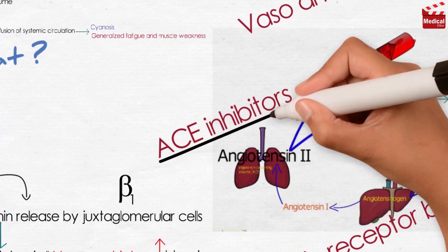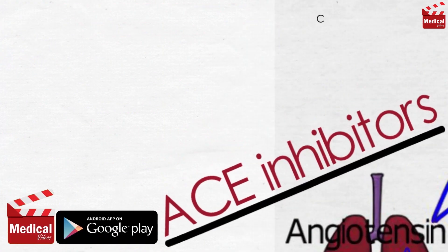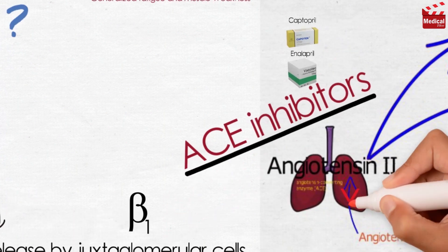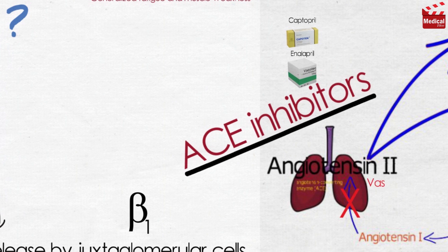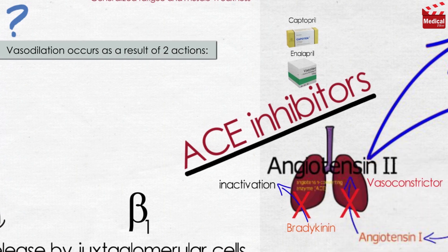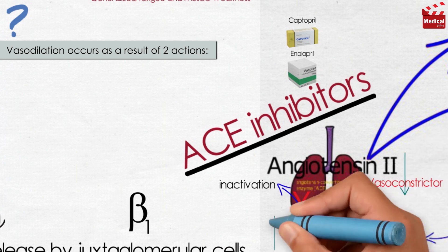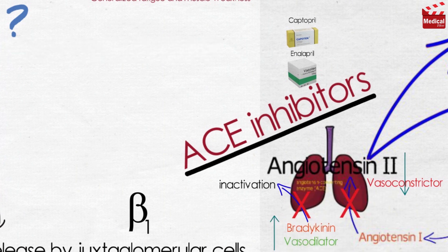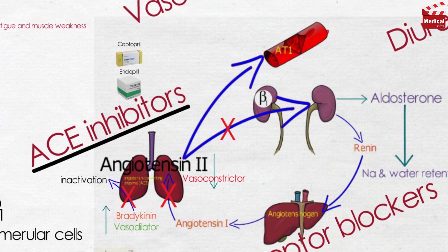Angiotensin converting enzyme inhibitors, or ACE inhibitors, such as captopril and enalapril, block the enzyme that cleaves angiotensin-1 to form the potent vasoconstrictor angiotensin-2. They also diminish the inactivation of bradykinin. So vasodilation occurs as a result of two actions: the decreased levels of the vasoconstrictor angiotensin-2, and increased levels of bradykinin, which is a potent vasodilator.